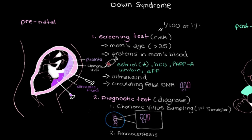The reason amniocentesis is done later than chorionic villus sampling is that it takes time for amniotic fluid to build up. Around the second trimester, there is usually enough fluid to take a sample without too much risk. It's worth noting that for both prenatal diagnostic tests, there is a very small risk of miscarriage, but at these respective time periods the risks are at their lowest.